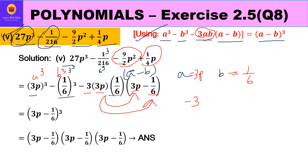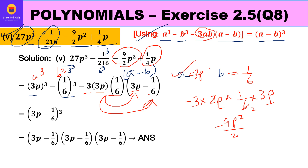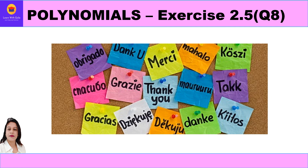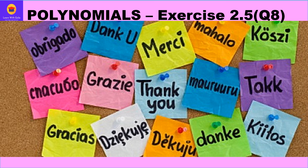Checking: 3 × 3p × 1/6 × 3p gives 9/2 p², and similarly we can verify the 1/4 p term. Once we have identified a = 3p and b = 1/6, the factors are (3p - 1/6)³, which means multiplying the base three times. So this is the answer for the fifth part. That's all — I hope you have understood all five parts related to factorization of cubic polynomials. Thank you everyone, have a great day ahead.